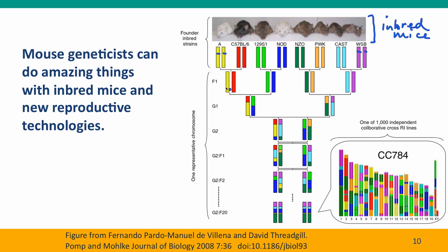The mice are then bred in pairs to generate an F1, and those F1s are interbred to generate a mouse whose parentage comes from four of these strains. Then these mice are bred in pairs to generate mice whose parentage comes from all eight strains. These mice were then bred for 20 generations of recombination — 20 generations of normal meiosis and mating — which resulted in many crossovers between chromosomes inherited from these different parents. In different mice, the crossovers happened in different places, so the researchers wound up with a population of a thousand independent mice with different genetic histories.